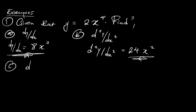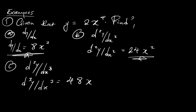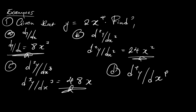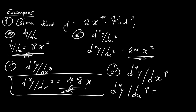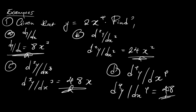Let's also say we were asked to find the third derivative, d³y/dx³. We differentiate the second derivative to get 48x — reducing the power by 1 gives a power of 1, which we don't write. Then for the fourth derivative, d⁴y/dx⁴, we differentiate the third derivative and we get 48 as our final answer, since the derivative of 48x is just 48.